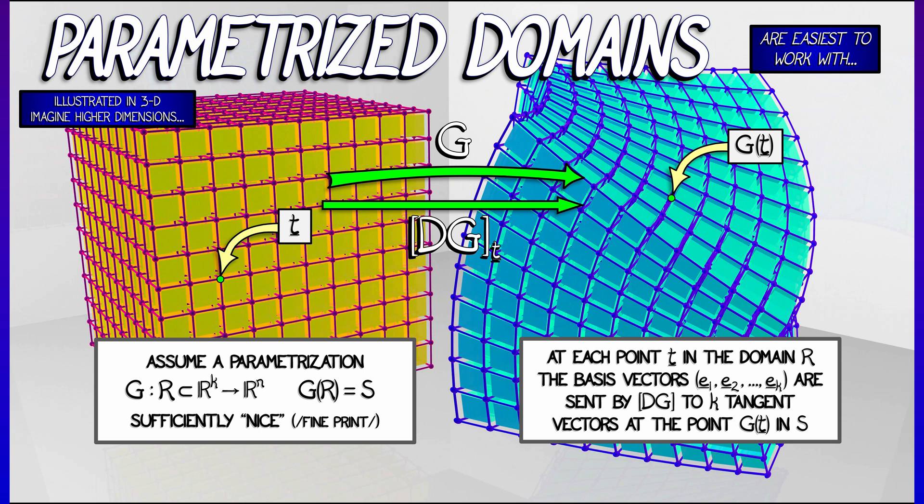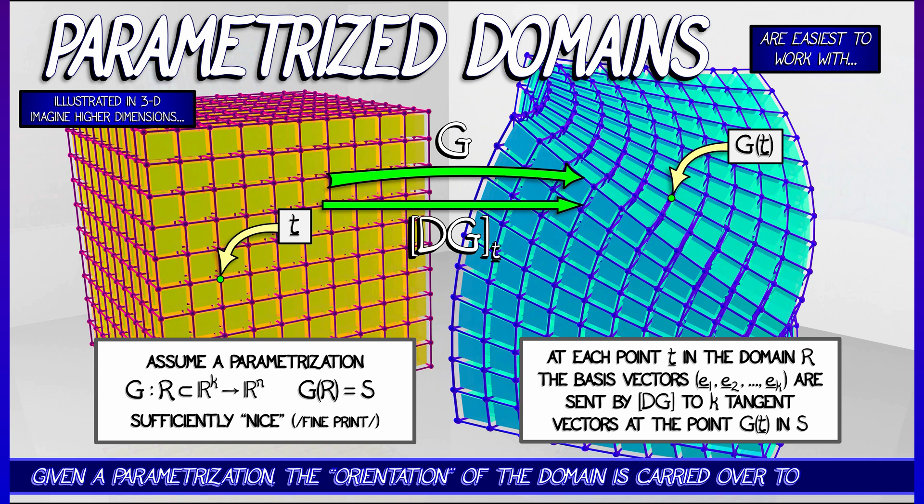to K tangent vectors at that point, G of T in S. And that's going to be really nice because that's automatically going to assign an orientation to this k-dimensional manifold S.